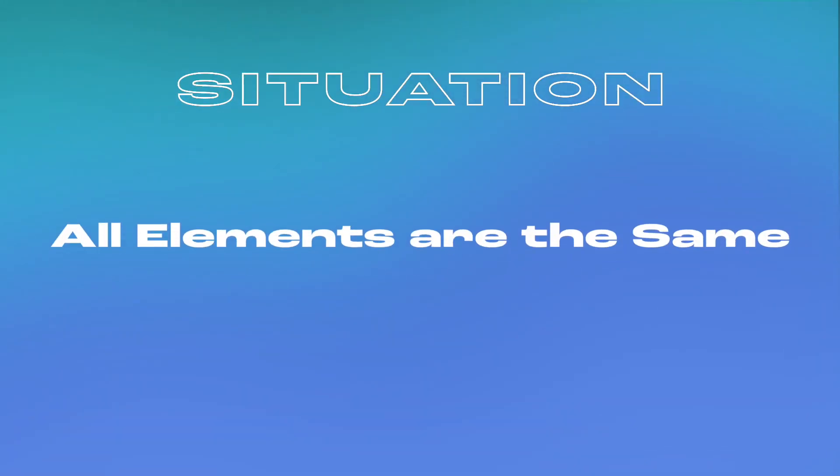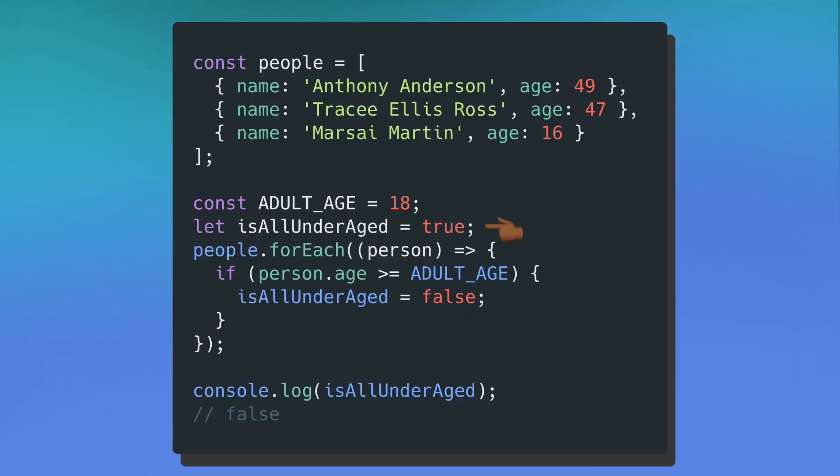The last situation, which is the opposite of the previous one, is finding out if each element in the array is specifically the same in one certain way. In the last situation we used some, but here we want to use the method every. With forEach, I have a variable isAllUnderAge set to true. Inside forEach's callback, I check if the current person is 18 or older; if that's the case, I change the variable to false. Similar to using forEach instead of some, there's a lot to keep track of — like whether it makes sense to set the default boolean to true or false. In this case, it makes sense to default isAllUnderAge to true, assuming everyone is under 18, and flip it to false only when someone 18 or older is found. This is a lot of mental energy spent on something that doesn't need to be handled by the developer.